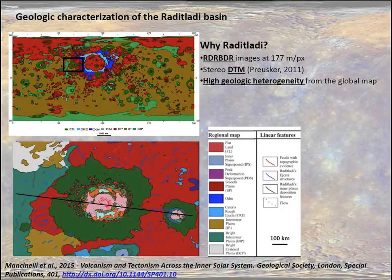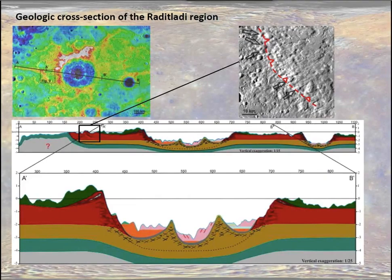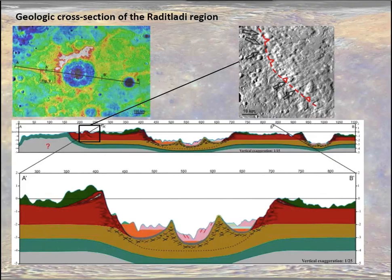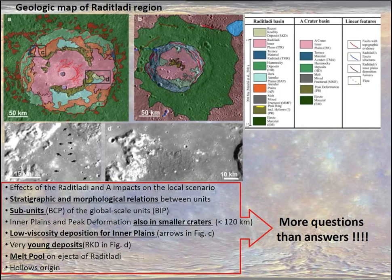The region from the global-scale map was presenting high heterogeneity, so it was a good candidate for more detailed investigation. We produced a local map, which can be found in a paper published last January. Exploiting the topographic data, we also produced a geological cross-section to interpret, with the highest resolution possible, the geologic scenario also in the third dimension — in depth.